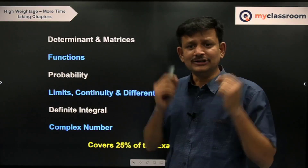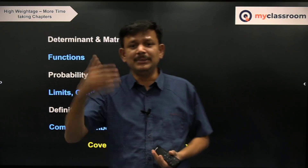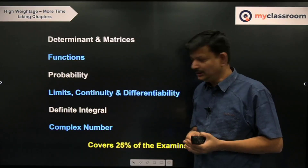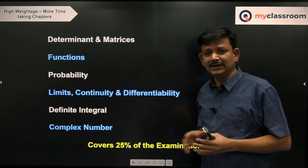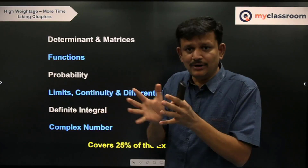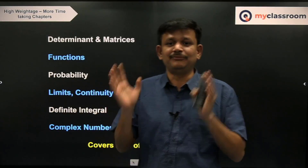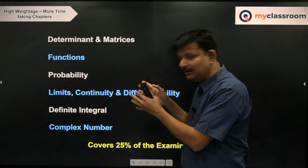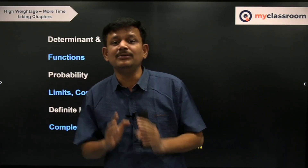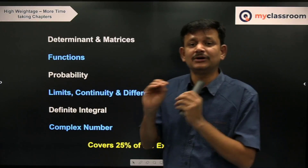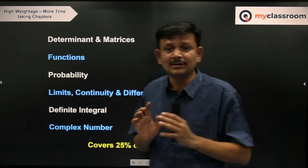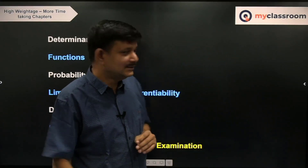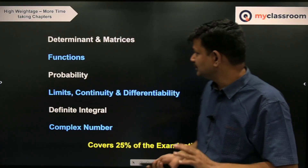Definite Integrals have high weightage — at least two questions will be asked — but it is a little time-consuming given the variety of question types. Do it towards the end of your preparation. Complex Numbers has lots of varieties, but if you want to cover it quickly, focus on the geometry of complex numbers, standard loci, and basic properties. Modulus (|z|) and argument (arg z) are very important. Finally, De Moivre's theorem and the rotation theorem are what you have to learn. This completes 85% of your preparation.